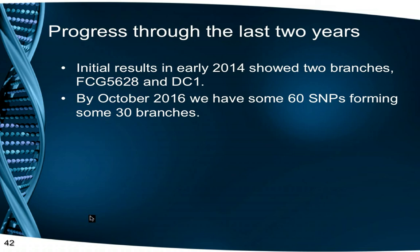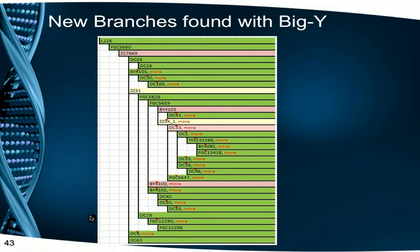Initial results showed two branching SNPs, but now with 50 Big Y tests, we still have some 60 SNPs forming some 30 branches as well as hundreds of still private SNPs. Here is a chart of the branches now discovered under L226, with reliable branches in green together with four supposedly less reliable SNPs in pink and two palindromic SNPs in cream. Even though these later SNPs are considered possibly unreliable, they do seem to show consistency within the L226 tree.